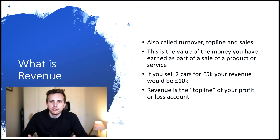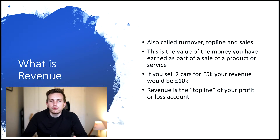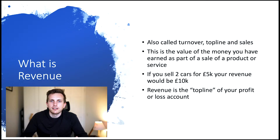So what is revenue? Revenue can be described as turnover, sales, and also the top line. The reason it's called the top line is because that's where it appears on your profit and loss account. Revenue or sales is effectively how much money you have earned from the sale of a product or service. For instance, if I was to sell cars and I sold two cars at £5,000 each, my revenue would effectively be £10,000. Revenue has to be recognised in the year in which it has occurred, and it appears on your profit and loss statement.